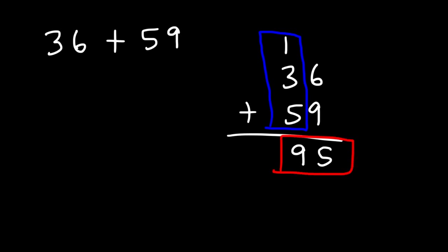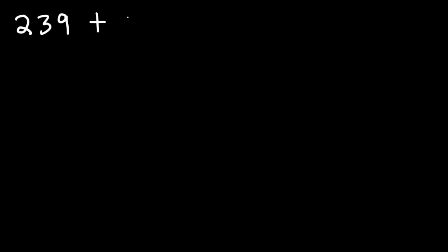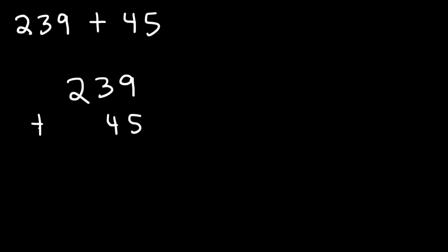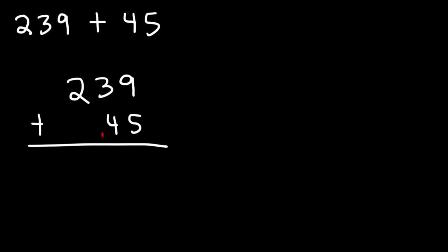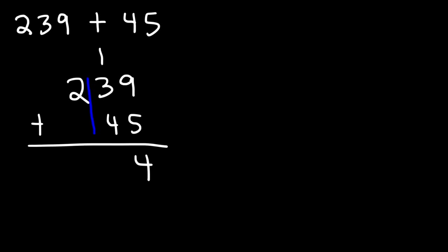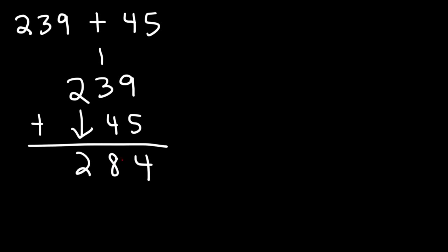Now what about adding a three-digit number with a two-digit number? Go ahead and try that example. All we need to do is line up everything correctly — you need to align digits by place value, since the 4 is in the tens place and the 3 is in the tens place, and the 2 is in the hundreds place. So first we add 5 plus 9, which is 14 — write the 4, carry the 1. Then 1 plus 3 plus 4 is 8. Bring down the 2, giving us 284.